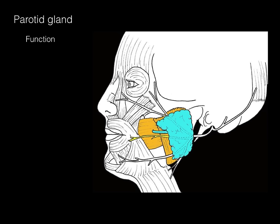The function of the parotid gland is to make saliva. Saliva helps digest carbohydrates, and it also helps form a bolus of food during mechanical digestion — breaking food into little bits and packing it together into a snowball-like bolus which is then swallowed.